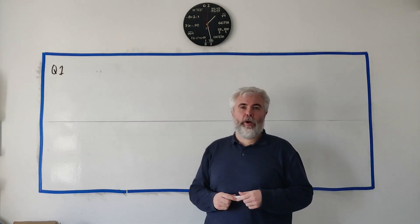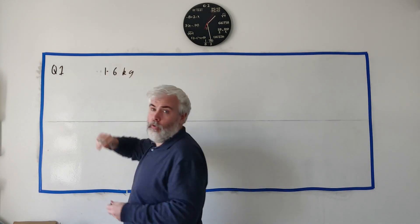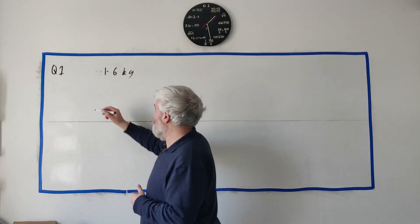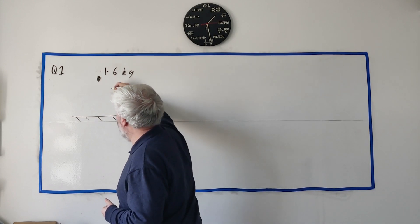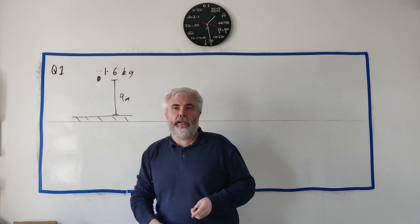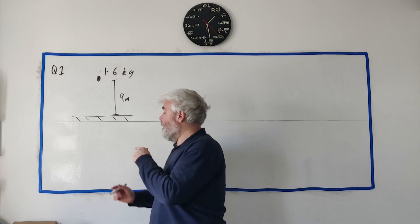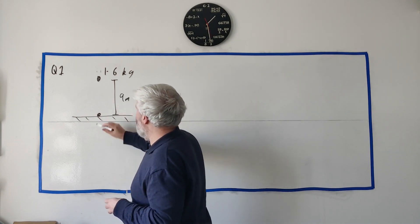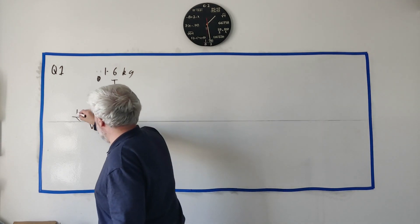In question one we're told about a particle of mass 1.6 kilos dropped from a height of 9 meters onto a flat surface. Let's put a ball here and the distance down is 9 meters. The speed of the particle the instant before hitting the ground is 12 meters per second.